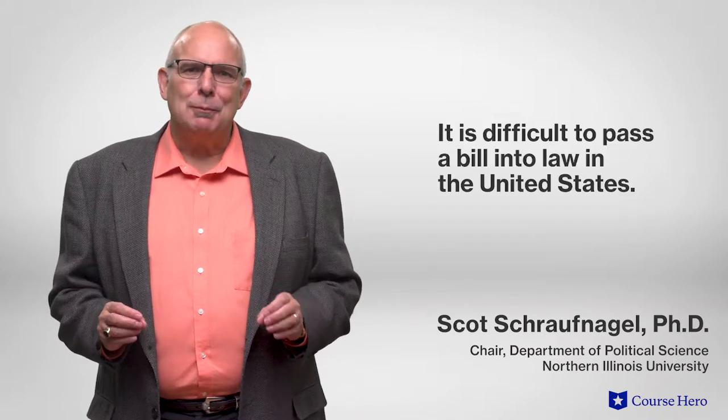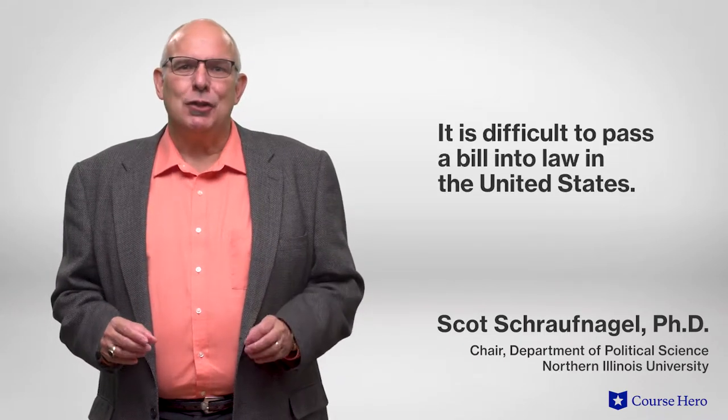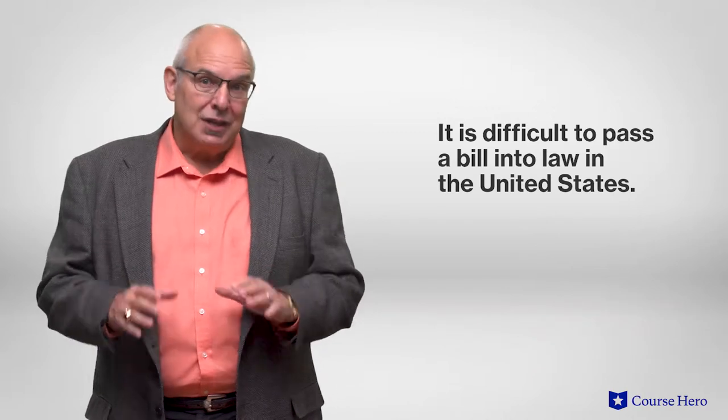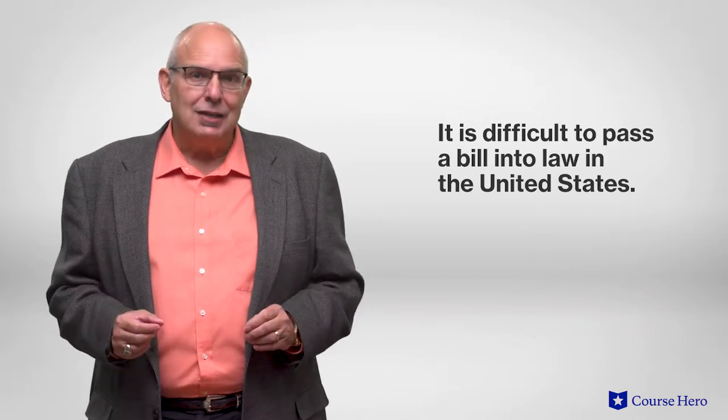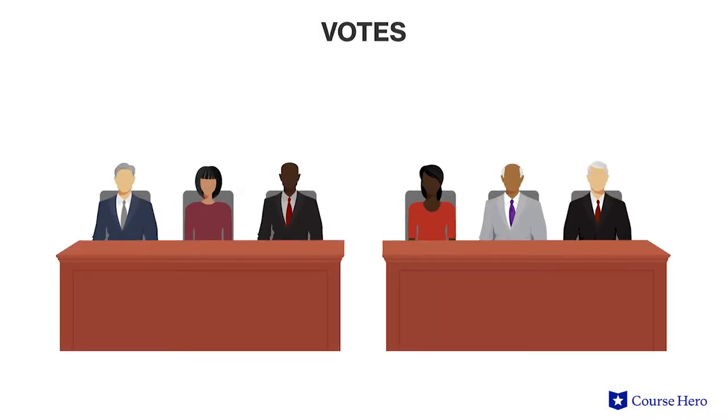As even a casual observer of American politics knows, it's difficult to pass legislation through both houses of Congress and get it signed into law. That's because for a bill to be successful, it must run what seems like an obstacle course through both chambers and survive numerous votes. This cumbersome process is nearly the same in each chamber with a few procedural exceptions.